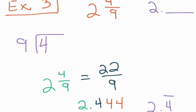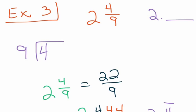So, 2.4 repeating is our answer. So, up here, we know that 2 and 4 ninths is equal to 2.4 repeating. Okay? And that's also equal to 22 over 9. All three of those mean the exact same thing. They all have the same value. They're all just written in different forms.